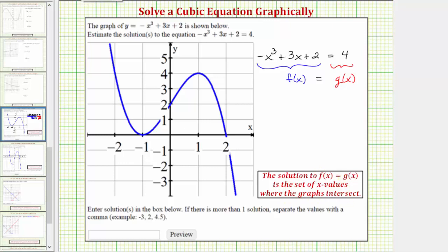So now we need to graph f of x equals negative x cubed plus three x plus two, which has already been done for us. This is the graph of f of x.